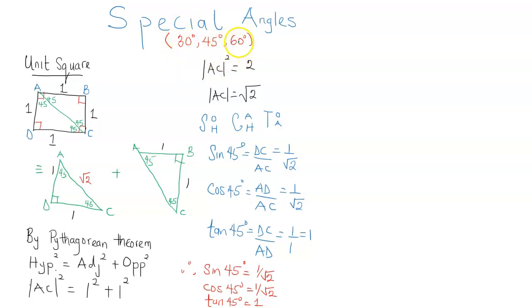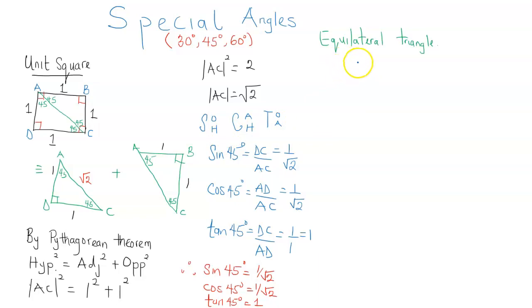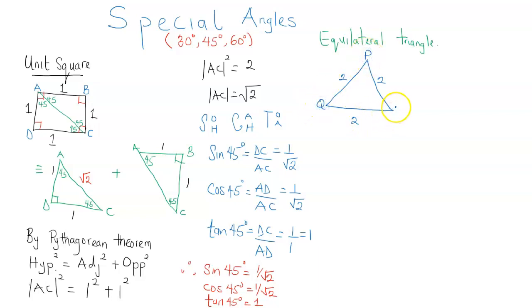Next we are going to work out the three ratios for 30 degrees and 60 degrees. To do that, we are going to be needing an equilateral triangle. An equilateral triangle has all of its sides equal and all of its angles equal. Since the sum of angles in a triangle is 180 degrees, each angle is going to be 60 degrees. I'm going to make each of the sides two units, and call the vertices P, Q, and R.